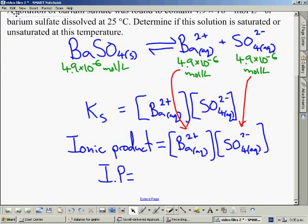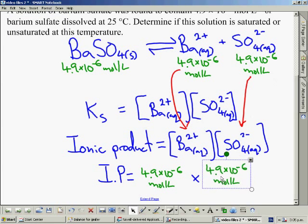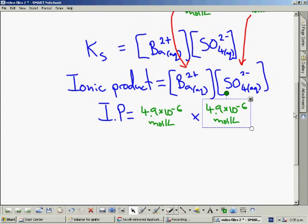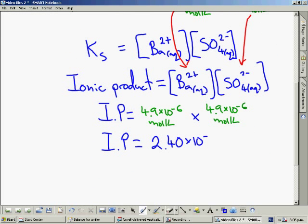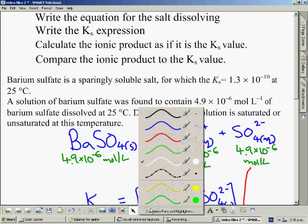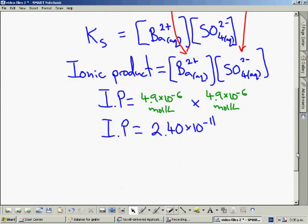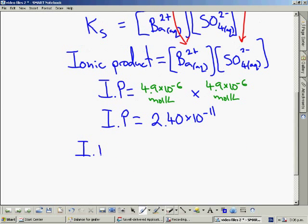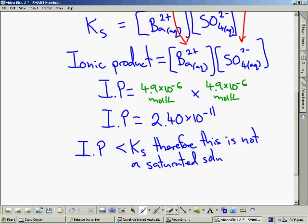Replace the square brackets with the actual values I have. The number I get is 4.9 times 10 to negative 6 squared effectively. The value of that is 2.40 times 10 to negative 11. If we go back to the original KS value, it is much larger than the actual IP value. So we could therefore say this is not a saturated solution of the salt. If it was, these two numbers would be equal.